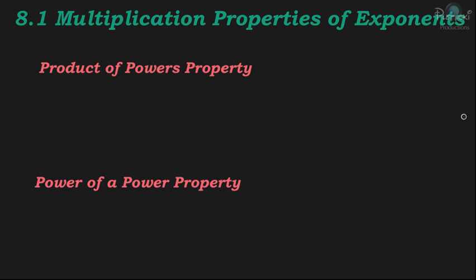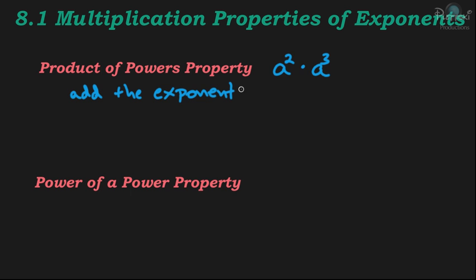The product of powers property: to multiply powers having the same base, you add the exponents. So for an example, if you have a squared times a cubed, the product of powers property tells you that all you have to do is add the exponents, if both terms have the same base.